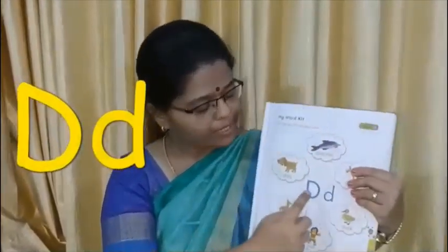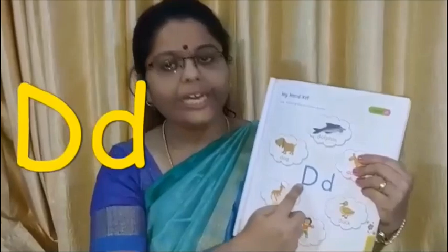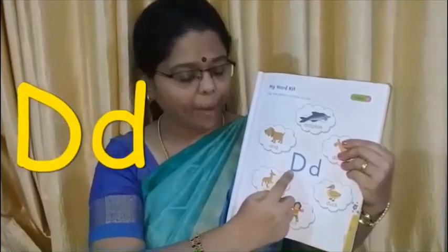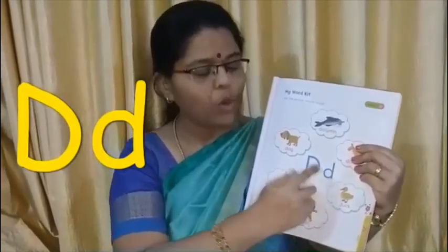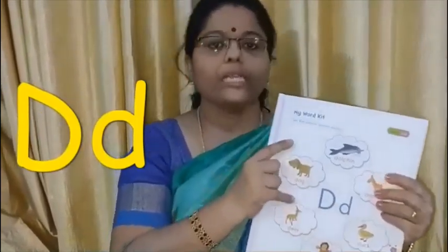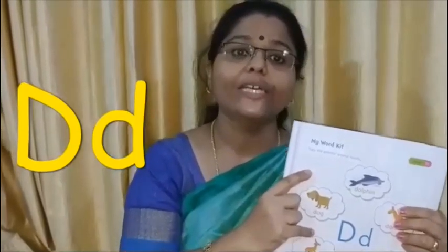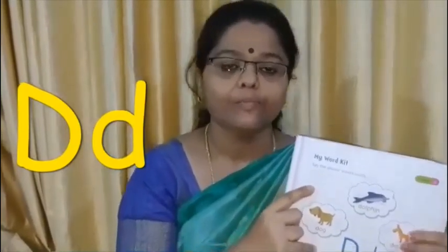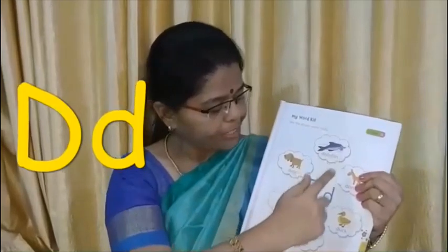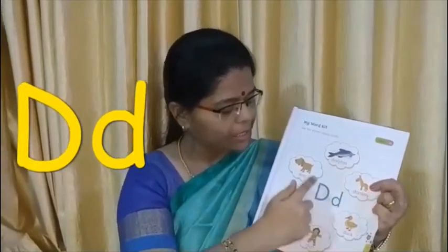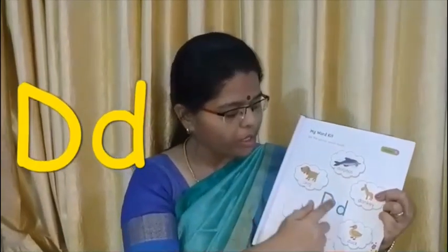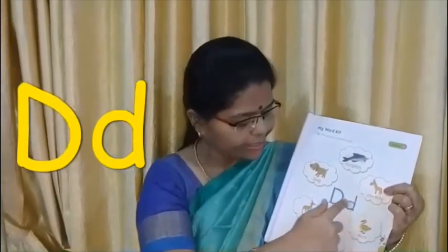Now we will move on to the next letter. This is D — capital D and small d. The sound of D is 'd'. What is it, children? D. D — dolphin. D — dog. D — donkey.